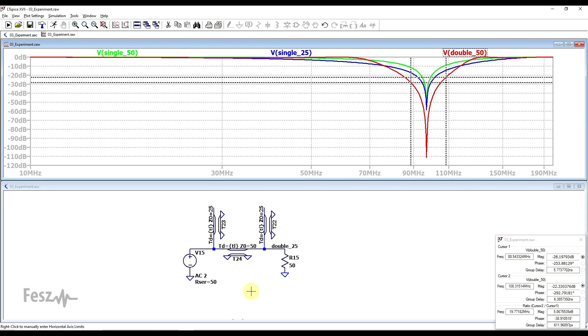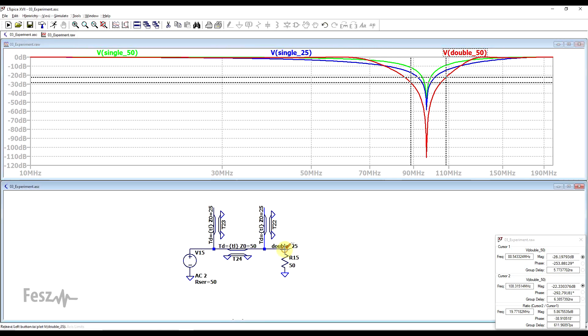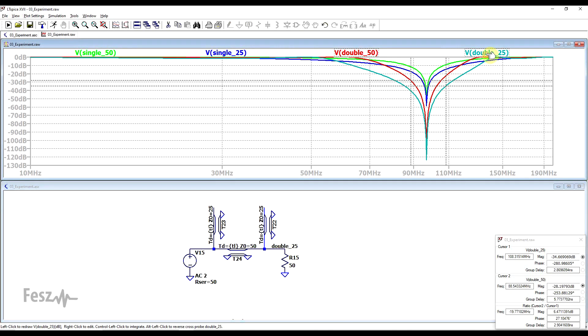So finally, I took the stubs and made them 25 ohm impedance. And if we look at this circuit and we move the cursors again, now we are finally getting close to the minus 30 decibel range. So we are getting somewhere in between minus 34 and minus 40 decibels of attenuation.